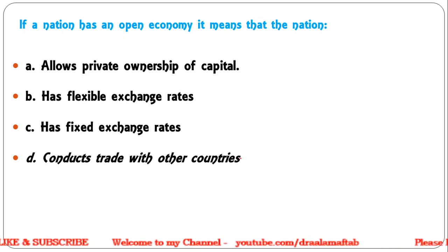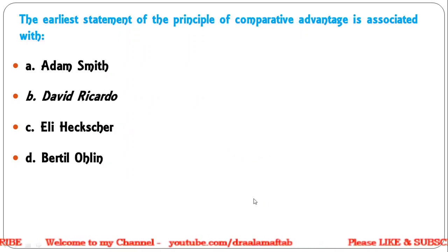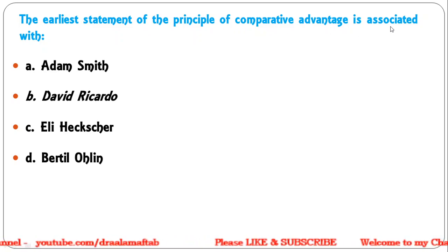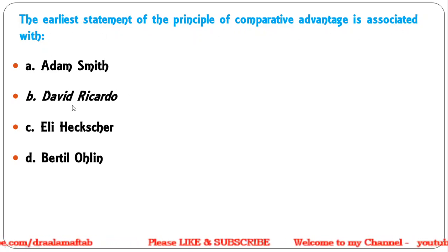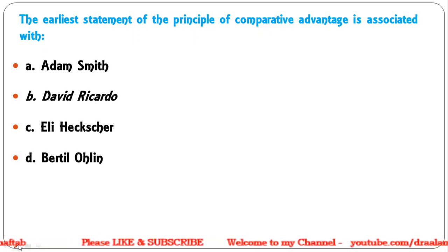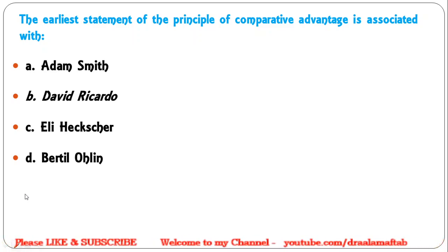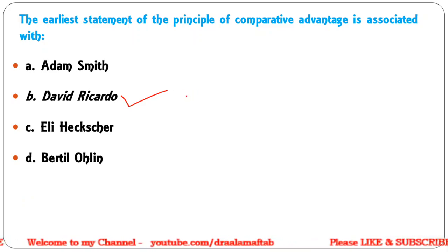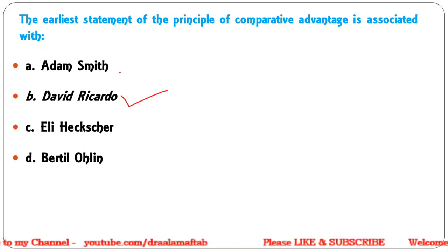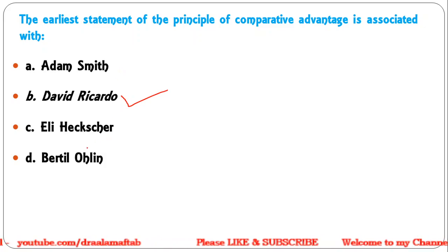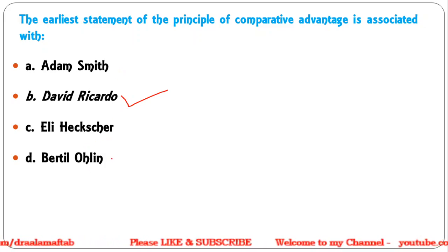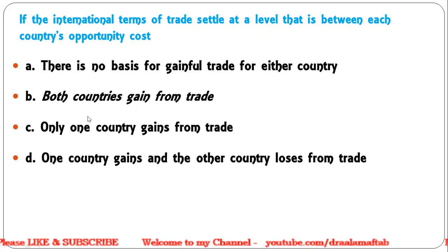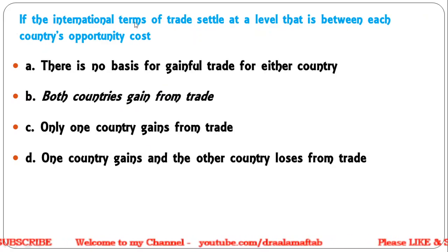Next: The earliest statement of the principle of comparative advantage is associated with — Adam Smith; David Ricardo; Eli Heckscher; Bertil Ohlin. Correct answer is David Ricardo, who gave the principle of comparative advantage. Adam Smith gave the absolute cost advantage, and Heckscher and Ohlin gave the factor endowment theory of trade.